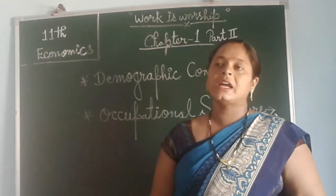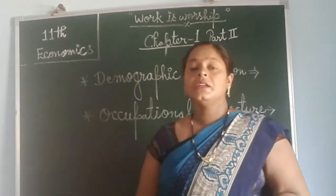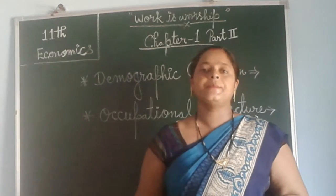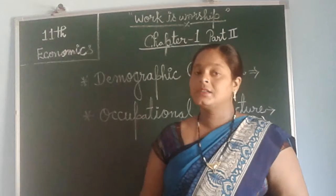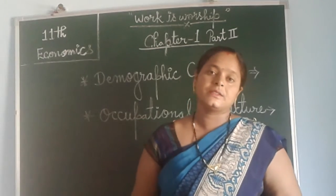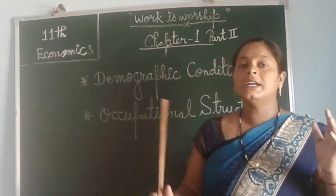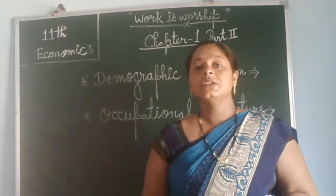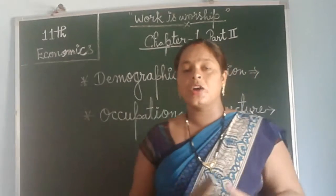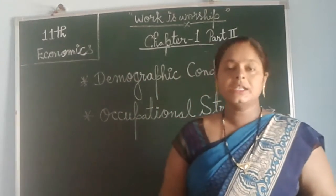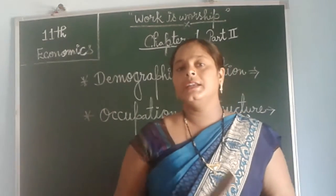Literacy rate at that time was very low — 16% overall, and in women only 7% literacy rate, under that calculation and census. And people's mortality rate was so high — the infant mortality rate per thousand was 218.